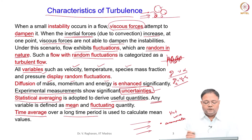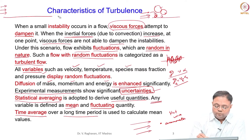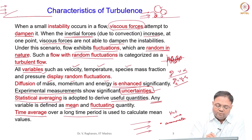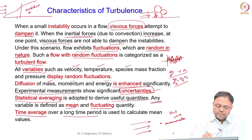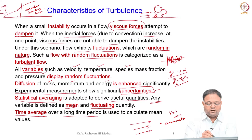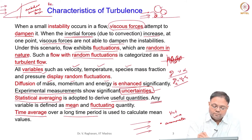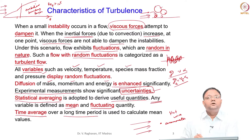We know there is a boundary layer. A flow coming from left to right has a laminar boundary layer for some distance, after which there is a transition to turbulence and then a turbulent boundary layer. As the Reynolds number increases — for example, if Re_x exceeds 10^5 — then turbulent flow occurs.